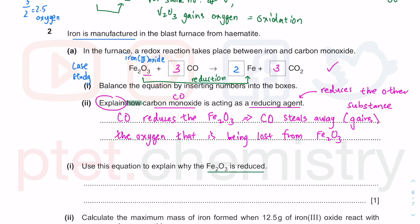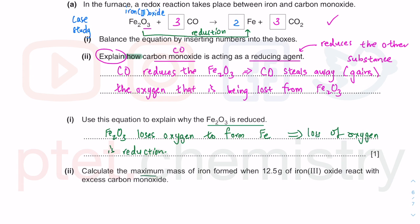Use this equation to explain why Fe2O3 is reduced. It's repeating the same idea from the previous question. The idea revolves around oxidation and reduction. The Fe2O3 loses oxygen to form Fe. Going from left to right, Fe2O3 has oxygen, then becomes Fe. Therefore, Fe2O3 has been reduced because loss of oxygen is reduction. This is just defining reduction as per the syllabus.